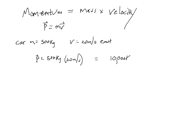That's 10,000 kilogram meters per second to the east — that is the momentum of that car. The unit of momentum is the kilogram meter per second. Unlike some unit combinations in the SI system, the unit of momentum does not get its own name.